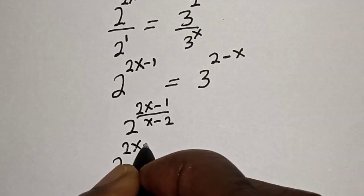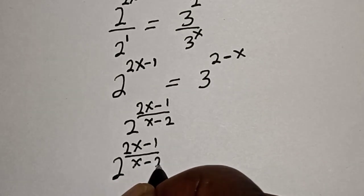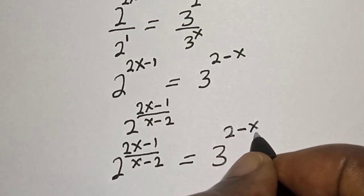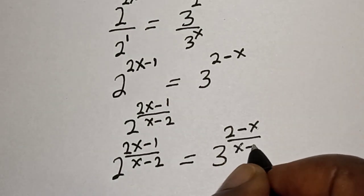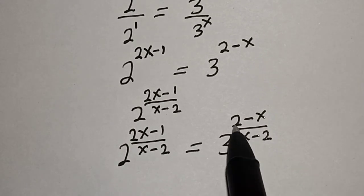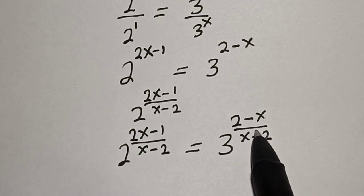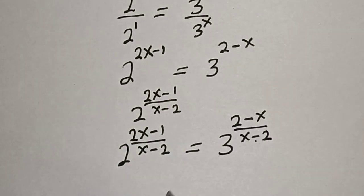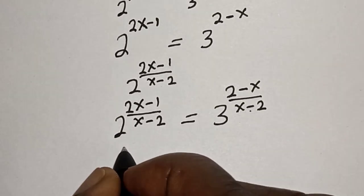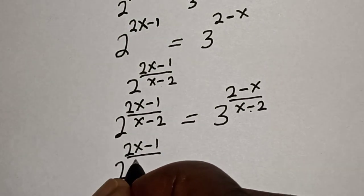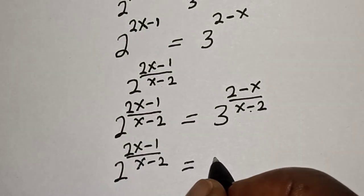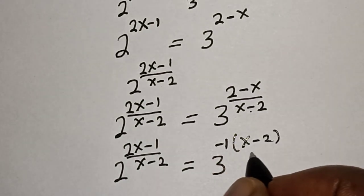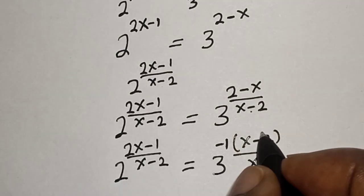That is, 2 to the power of 2x minus 1 divided by x minus 2, is equal to 3 to the power of 2 minus x divided by x minus 2. Since 2 minus x and x minus 2 are present, we multiply the numerator of the exponent on the right-hand side by minus 1. That gives us 2 raised to the power of 2x minus 1 divided by x minus 2, is equal to 3 to the power of negative 1 times x minus 2, divided by x minus 2. This cancels.